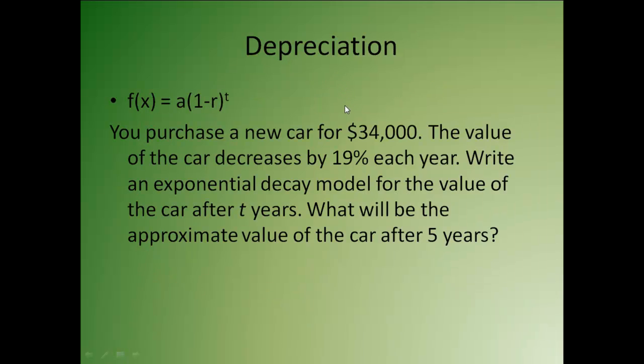We're going to look at how depreciation fits into exponential decay. Now most things that you buy depreciate over time. So this is the formula that we use for depreciation. It's very similar to our compound interest formula. One of the main differences is that now we have 1 minus r because we're depreciating. So it says that you purchase a new car for $34,000. That would be our a value. The value of the car decreases by 19% each year. Write the exponential decay model for the value of the car after t years. What will be the value after 5 years?